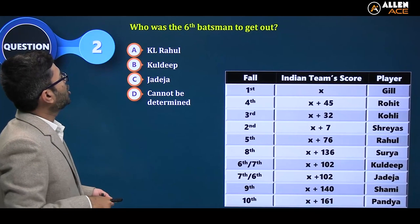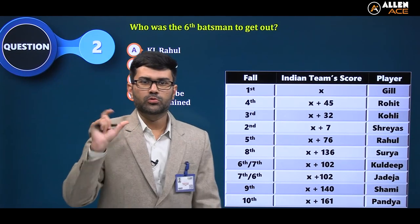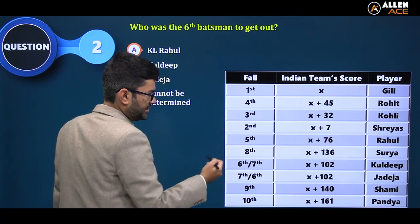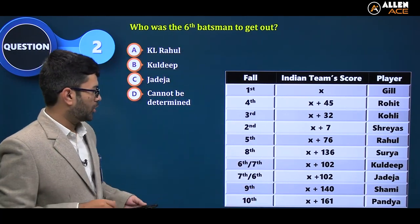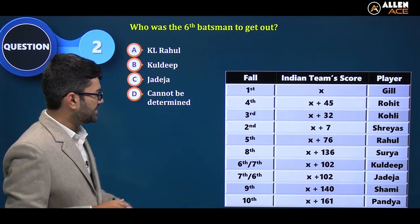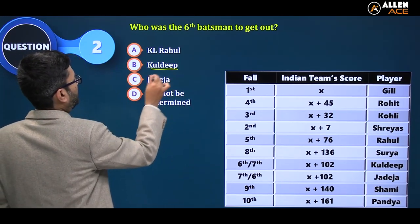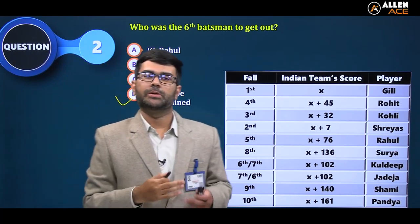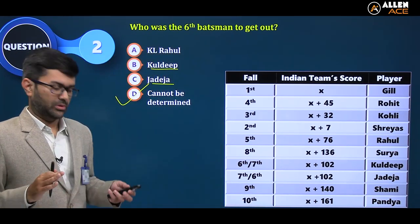Question 2: Who was the sixth batsman to get out? Both Kuldeep and Jadeja got out at the same team score of x plus 102, so we cannot determine which of them was 6th versus 7th. Looking at the options, since both Kuldeep and Jadeja appear as choices, the answer is option D — cannot be determined.